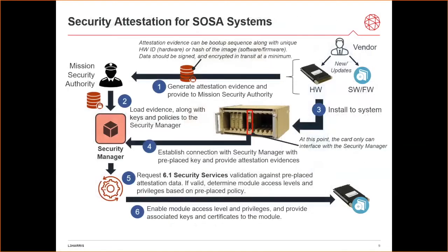Security attestation helps mitigate supply chain risk mentioned earlier. Security attestation is to verify the identity of an entity as well as validate its integrity. As vendors develop hardware and software entities, they also develop attestation evidence associated with their solutions. For hardware, this can be a hardware boot-up sequence; for software, it can be a hash of the image itself. The evidence is then provided securely to the mission security authority, which is loaded into the security manager prior to operations. When hardware and software is installed in the system, it starts with no privilege except to communicate with the security manager, enforcing the least privilege principle. The newly installed component then provides attestation evidence to the security manager to validate.